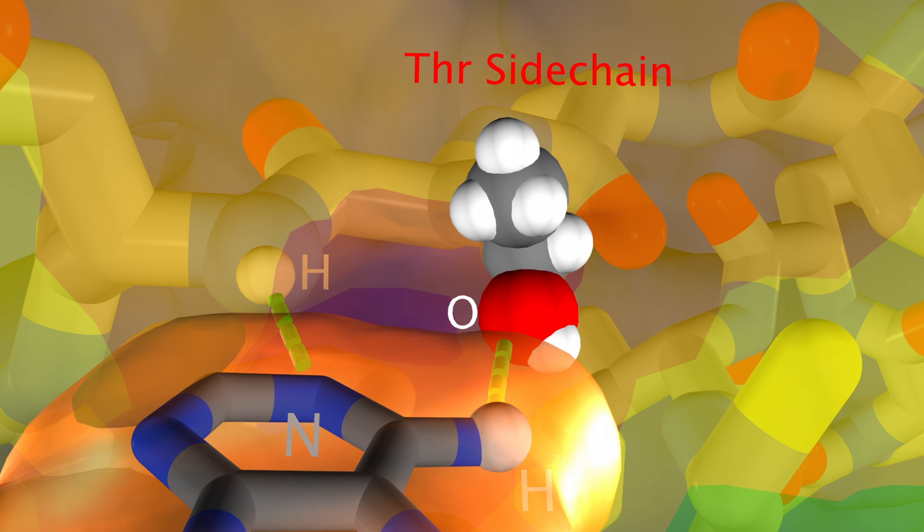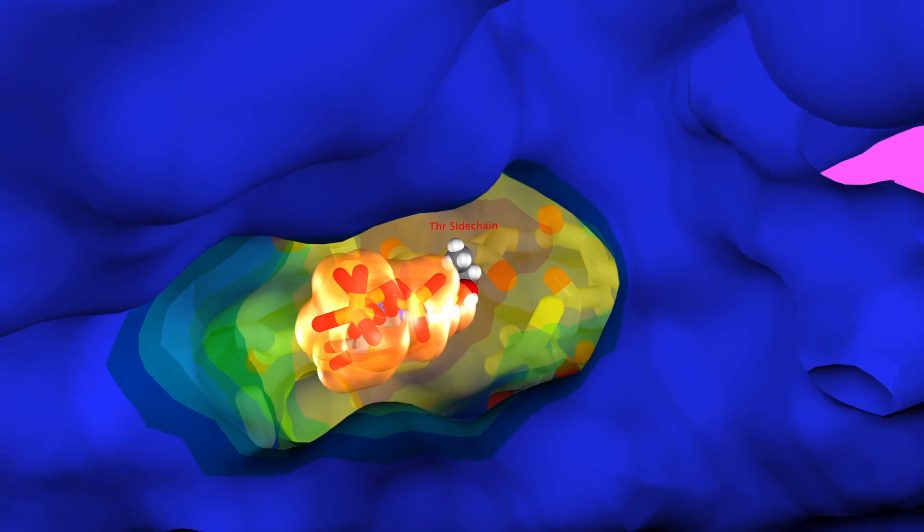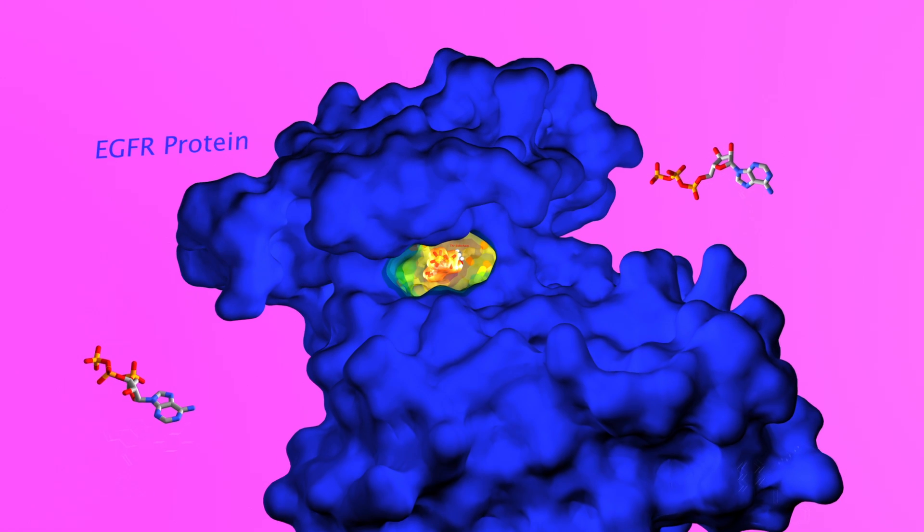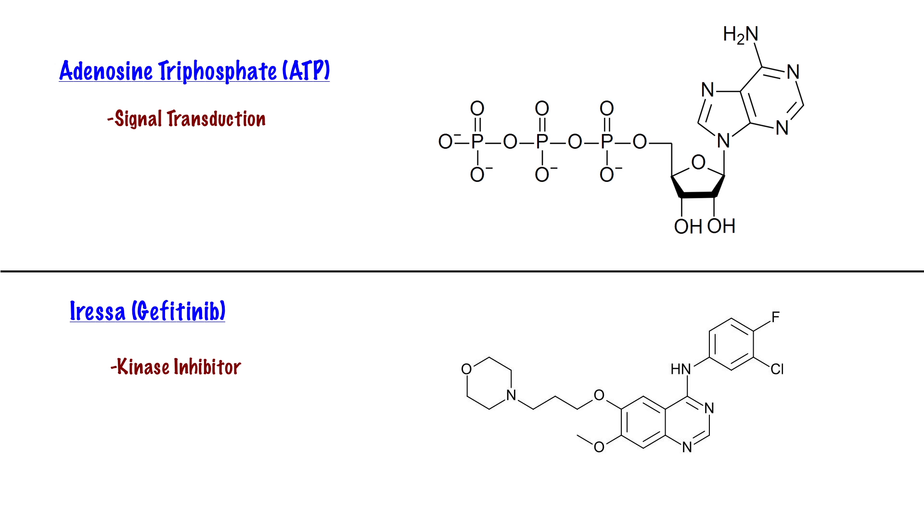The binding of ATP to the tyrosine kinase domain of the protein leads to phosphorylation of the tyrosine residue and, as a result, proliferation of cells. The drug Iressa, or Gefitinib, is a tyrosine kinase inhibitor that blocks the binding of ATP and thus no phosphorylation.